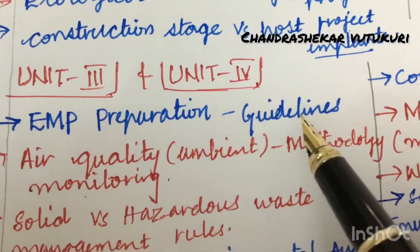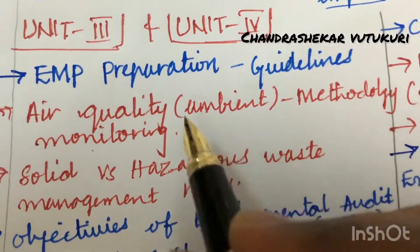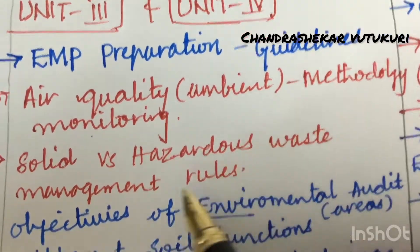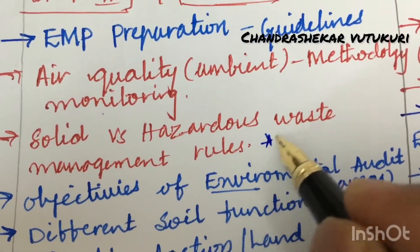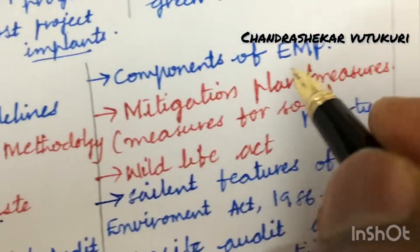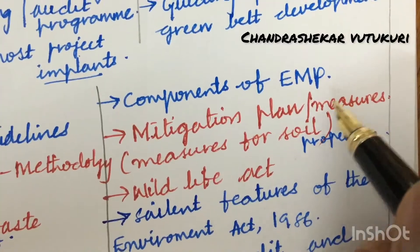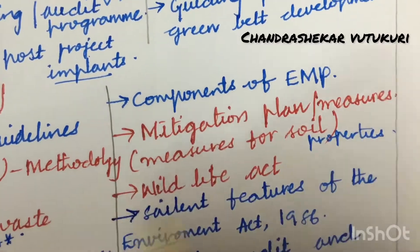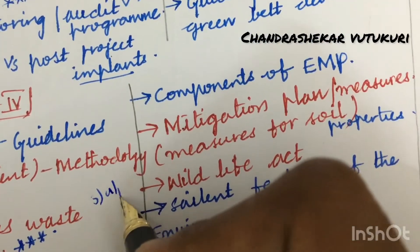EMP preparation and its guidelines, air quality and ambient air quality monitoring methodology, solid versus hazardous waste management rules may also be a very important question. Components of EMP, mitigation plan measures for soil properties, and the Wildlife Act — from this part we can expect one question for sure, that is 5A as well as 5B.